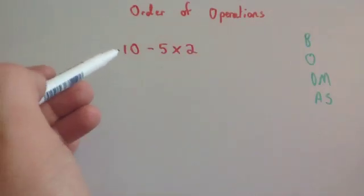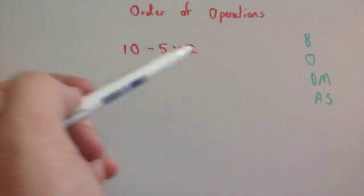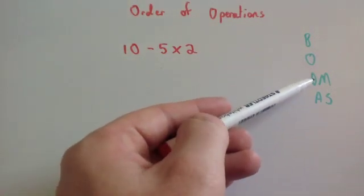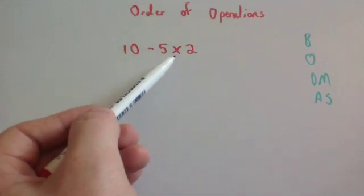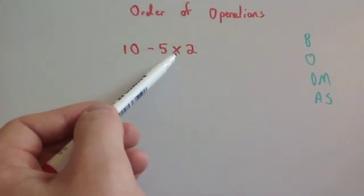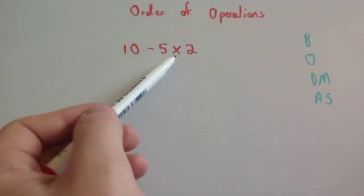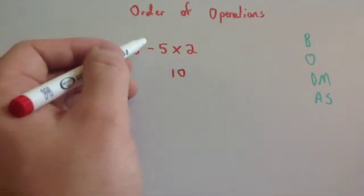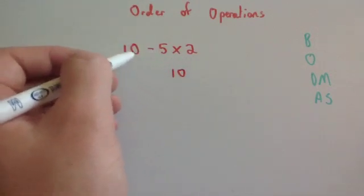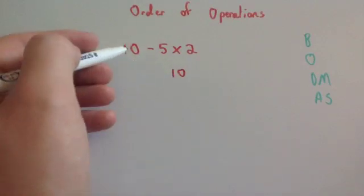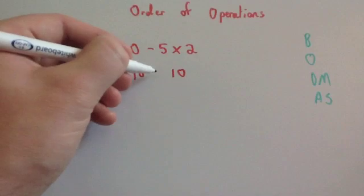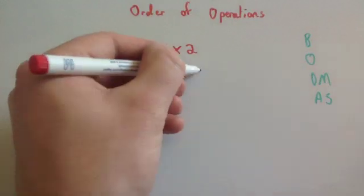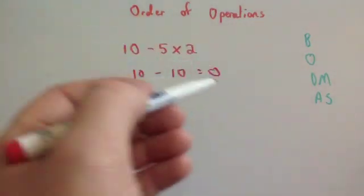Let's look at that first sum: 10 subtract 5 times 2. There are no brackets and no orders, but there is a multiplication, so we do the multiplication first: 5 multiplied by 2 is 10. Then we include the rest of the sum: 10 subtract 10, which is equal to 0. So the answer to this question is 0.